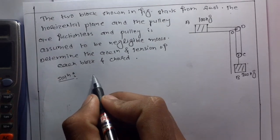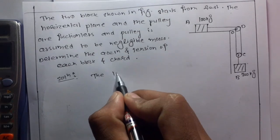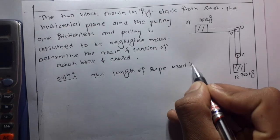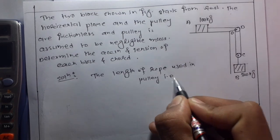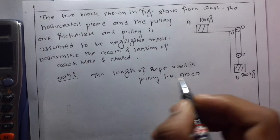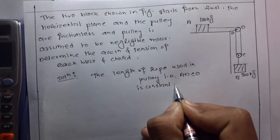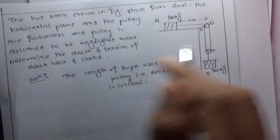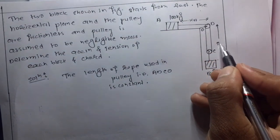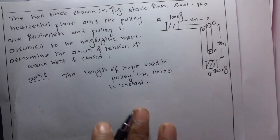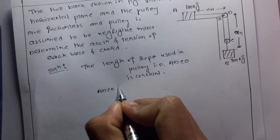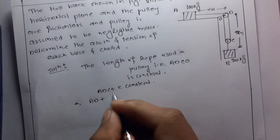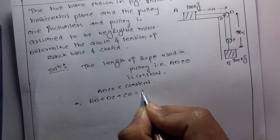First, the length of rope used in the pulley — that is, the path A-D-C-O — is constant. Let the position of block A be xA and the position of block B be xB. So A-D-C-O is constant, meaning AD + DC + CO is equal to a constant.